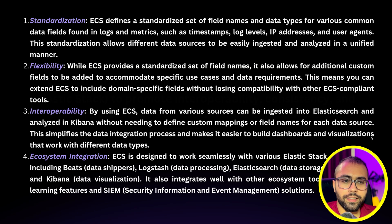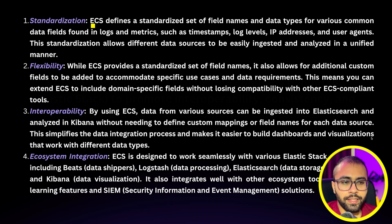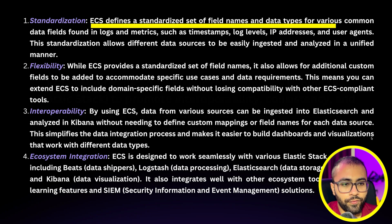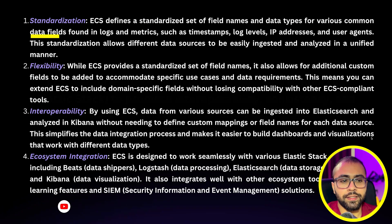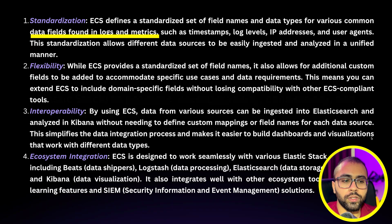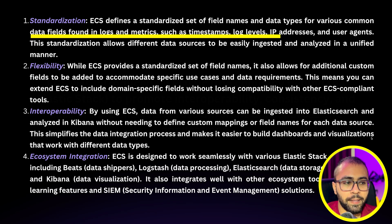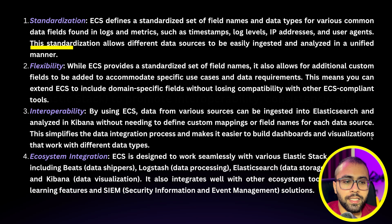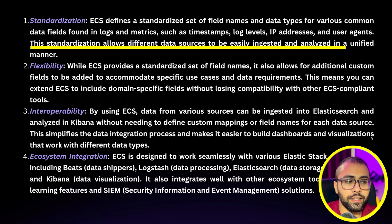There are four key things: Standardization, Flexibility, Interoperability, and Ecosystem Integration. First, standardization — ECS defines a standardized set of field names and data types for various common data fields found in logs and metrics. The most commonly used fields include timestamps, log levels, IP addresses, user agents, etc. This standardization allows different data sources to be easily ingested and analyzed in a unified manner.